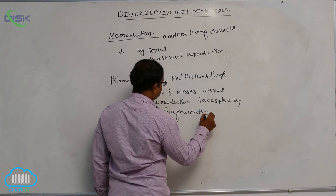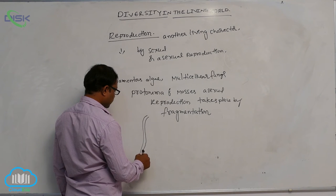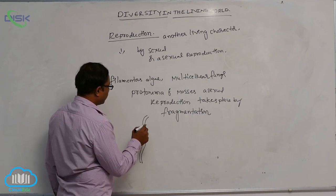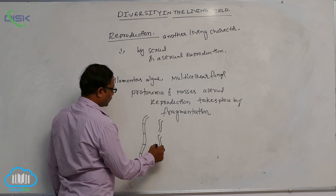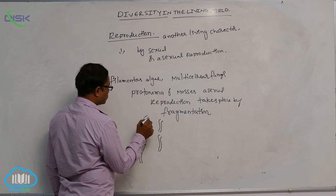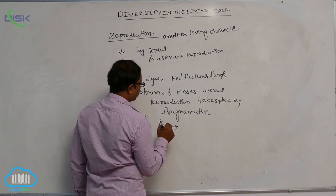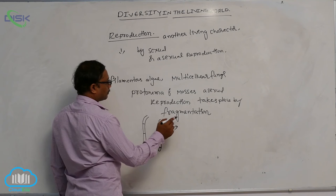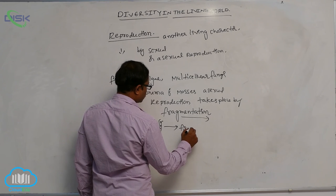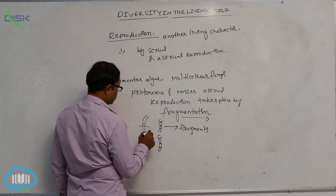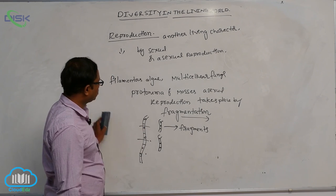Fragmentation means the filament — a long, slender, thread-like structure — is divided into many pieces called fragments. Each fragment contains a nucleus and can live independently. That process is known as fragmentation.